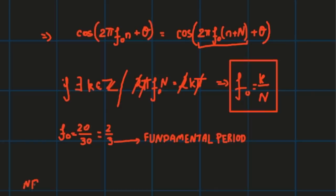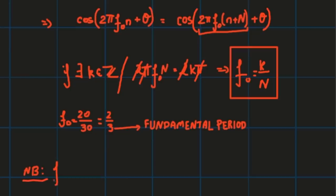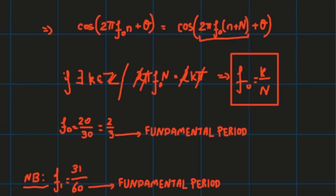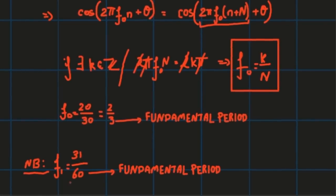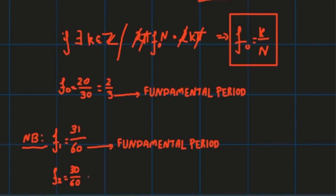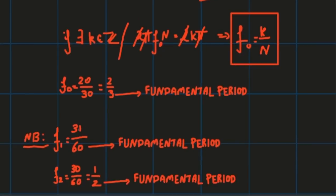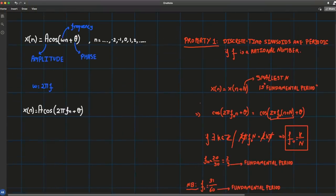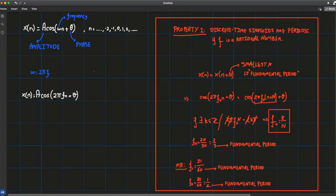Beware: small changes in frequency may result in very large changes in the period. For example, f1 = 31/60 — since 31 and 60 are co-prime, the fundamental period is 60. But if you change it slightly to 30/60, this reduces to 1/2, giving a fundamental period of just 2. So small changes in frequency can lead to catastrophically large changes in the fundamental period.